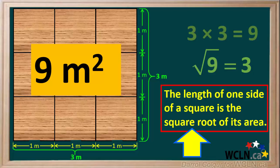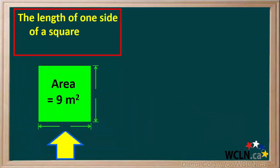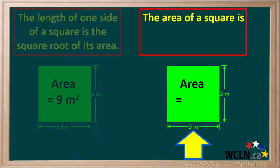3 is the square root of 9. To summarize, the length of one side of a square is equal to the square root of its area. We also know from before that the area of a square is equal to the length of one side squared.